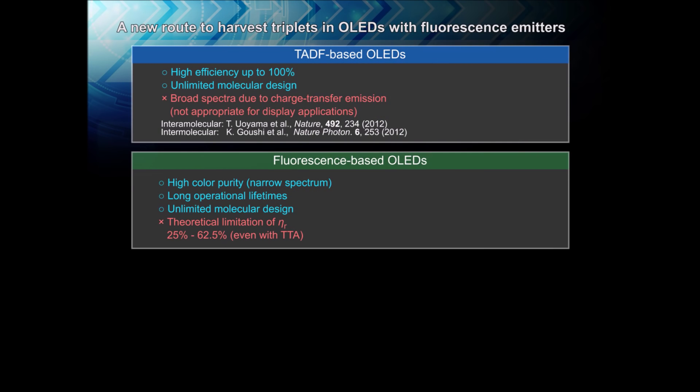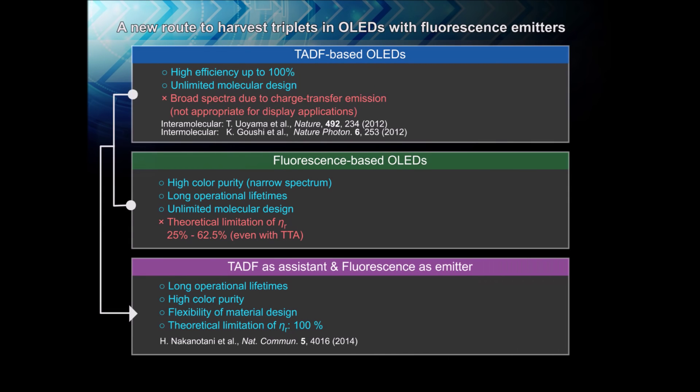And now, almost 30 years after the first report of practical fluorescent OLEDs, advances in efficiency have come full circle with the demonstration of 100% internal quantum efficiency in OLEDs using traditional fluorescent emitters, through the development of TADF-assisted fluorescence at OPERA. This new system succeeds at combining the high efficiency and triplet harvesting ability of TADF molecules with the long operational lifetime and high color purity of fluorescent emitters.